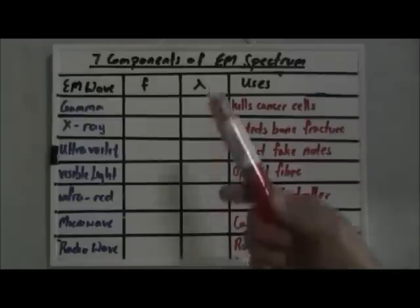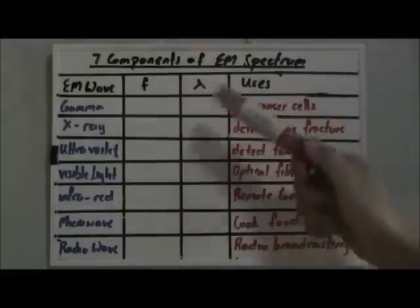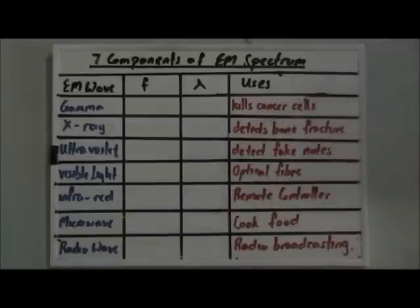Hi, I'm Mr. Oumingyo. I'm going through the seven components of the electromagnetic spectrum as well as the frequency order, wavelength order, and the corresponding uses. This table basically covers the key points of this chapter.